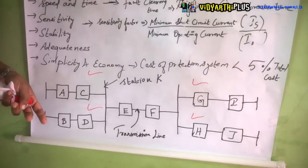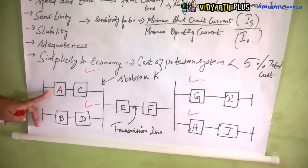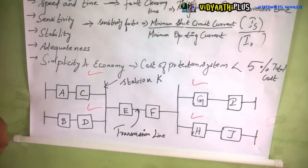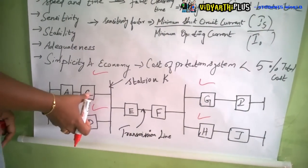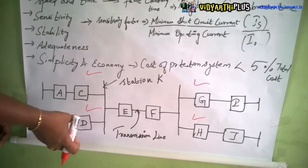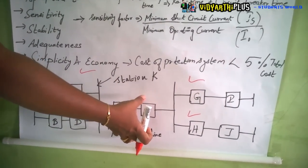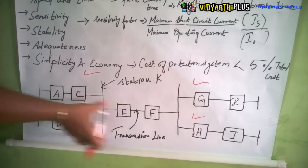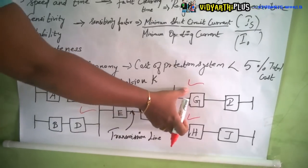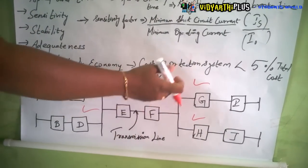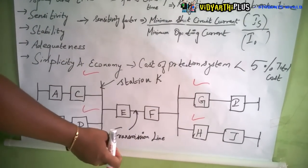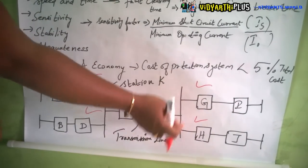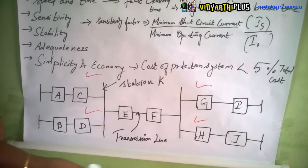C, D, G, H are called the primary protection relays, and A, B, I, J are the secondary protection relays. The main aim of primary protection relays is: if there is any fault in the transmission line, these four relays will operate first and isolate the transmission line from the rest of the system.